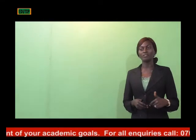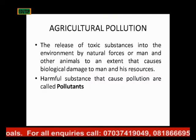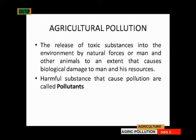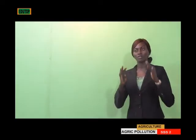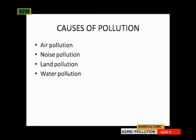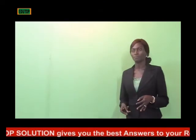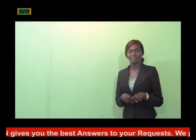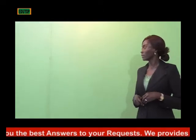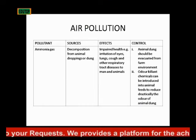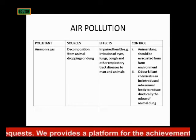Pollutants are harmful substances that cause pollution. The things that cause pollution are the ones we call pollutants. We have four types of pollution: air pollution, noise pollution, land pollution, and water pollution. Air pollution is the first that I will be discussing. I will put it in a table for easy assimilation, covering the pollutants, the sources, the effects, and the control.